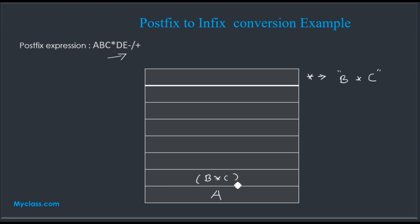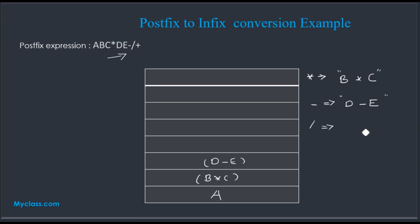Now D is also an operand, so we push D. E is also an operand, so we push E. We encounter a subtraction operator, so we pop D and E and create the string D minus E. Next, division is also an operator, so we pop the two elements — D minus E and B star C — and create a new string using division.